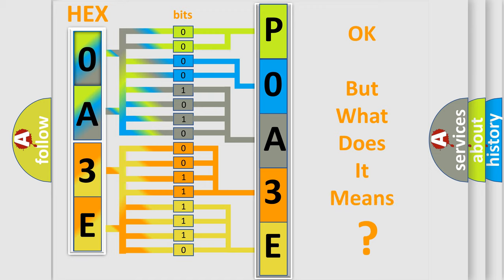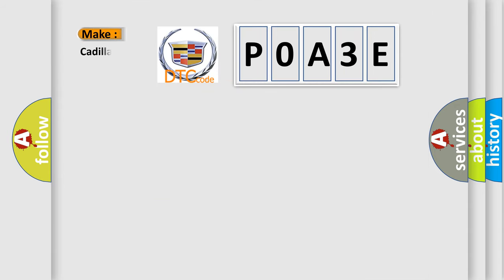We now know in what way the diagnostic tool translates the received information into a more comprehensible format. The number itself does not make sense to us if we cannot assign information about what it actually expresses. So, what does the Diagnostic Trouble Code P0A3E interpret specifically for Cadillac car manufacturers?